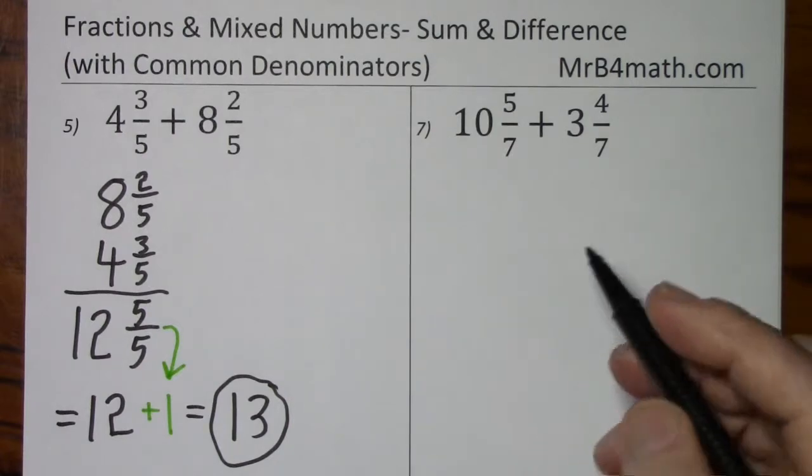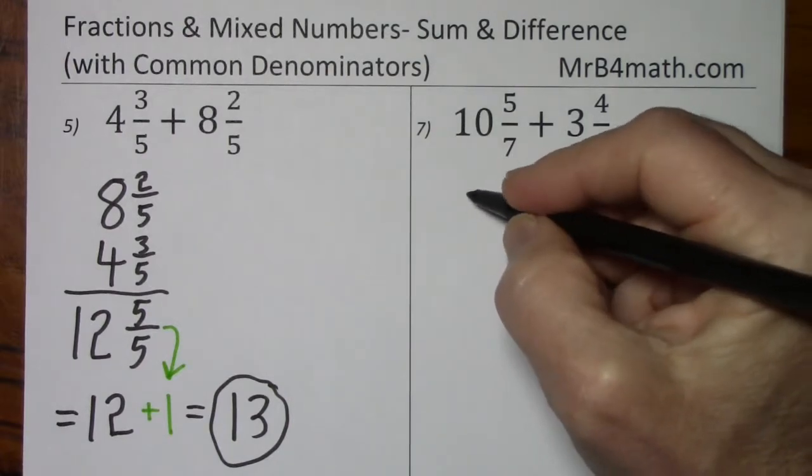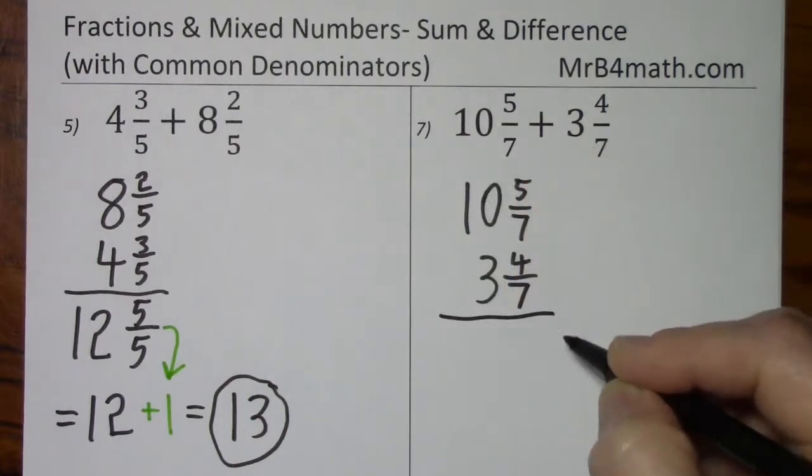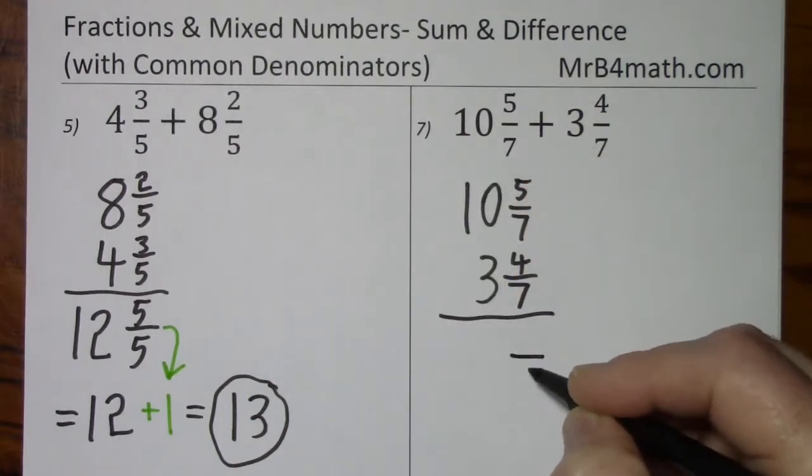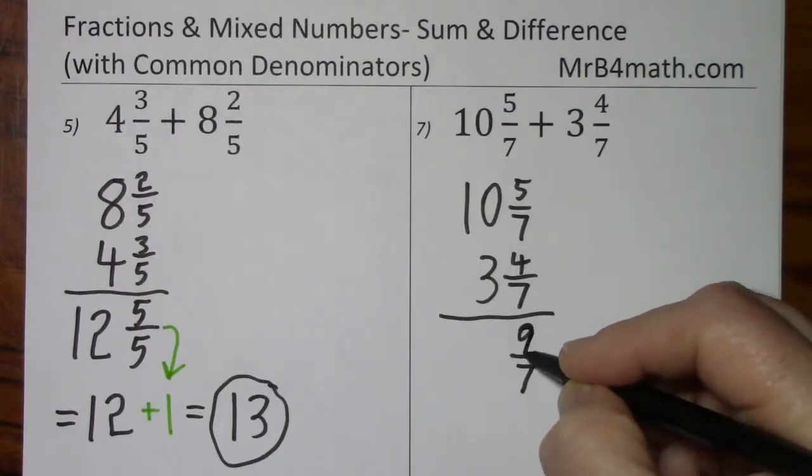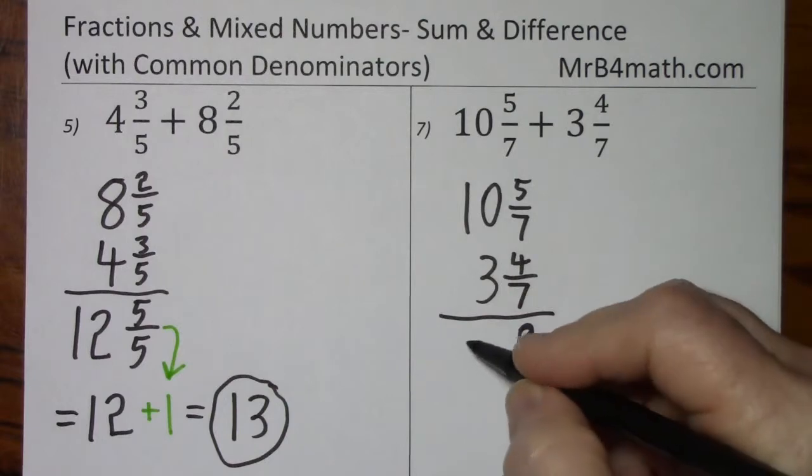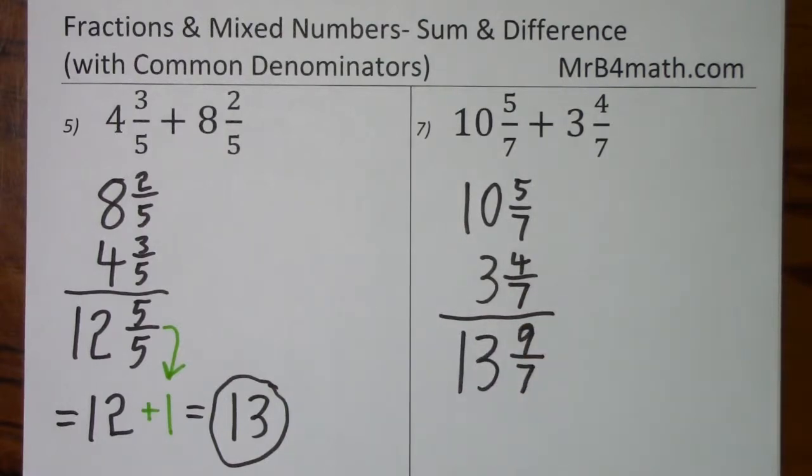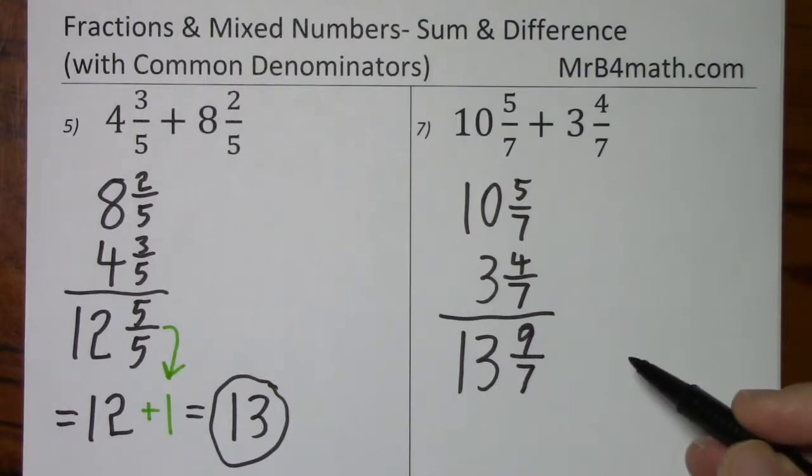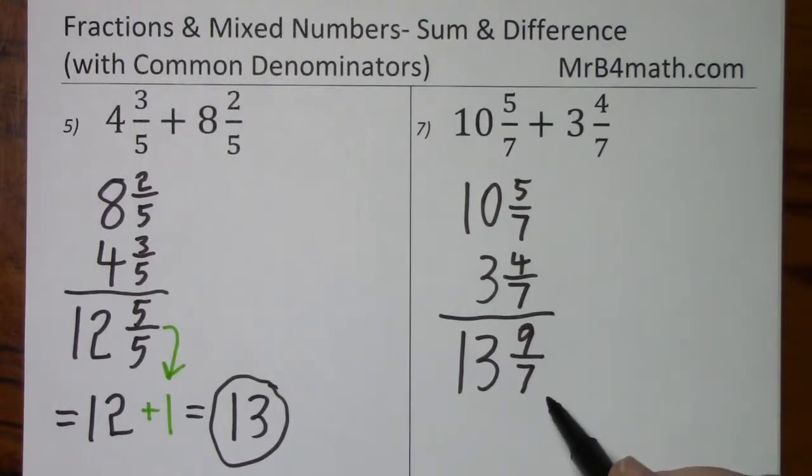Looking at this problem, the signs are the same. We will be adding. We keep our denominator. 5 and 4 gives us 9. 10 and 3, 13. But 9 sevenths is 1 and 2 sevenths. So we can't leave it in this form.